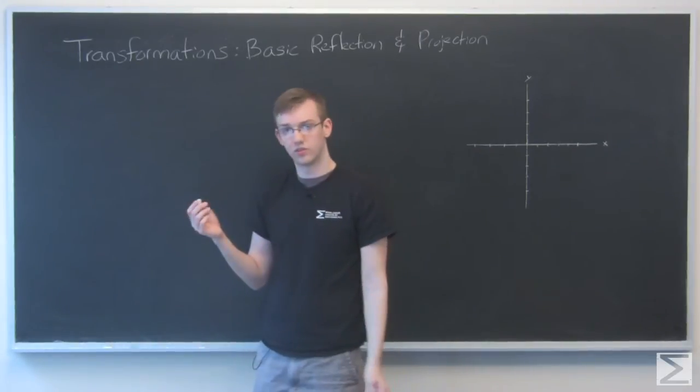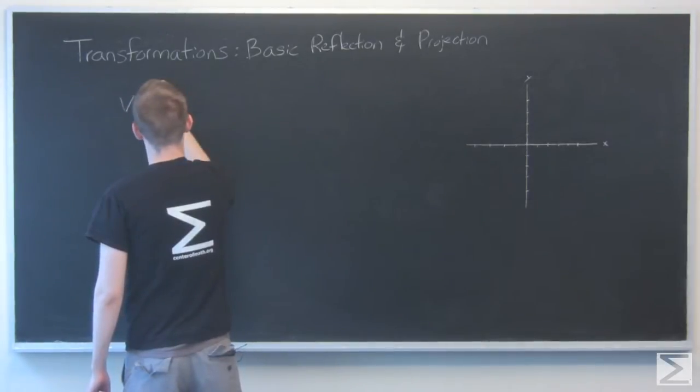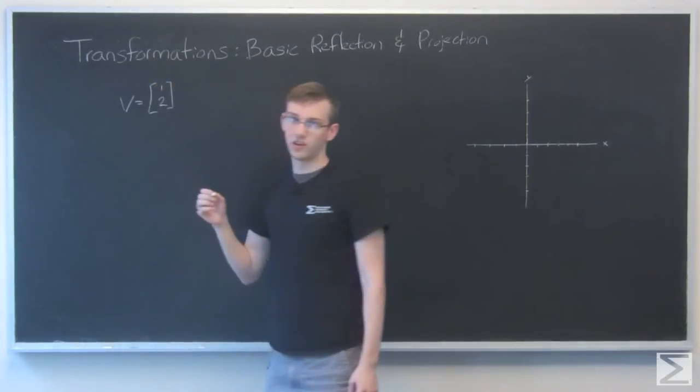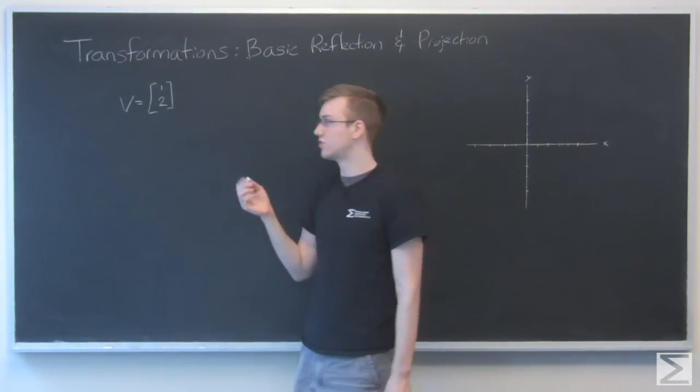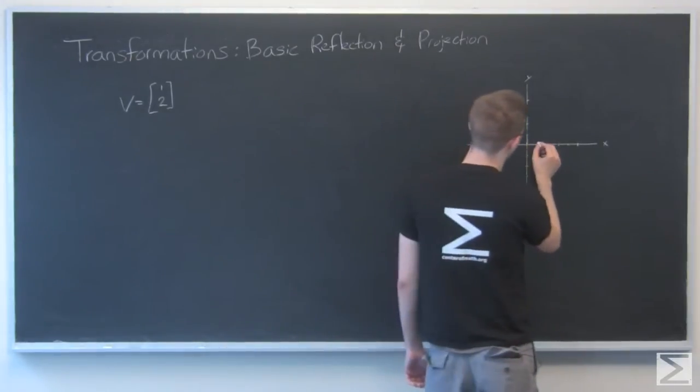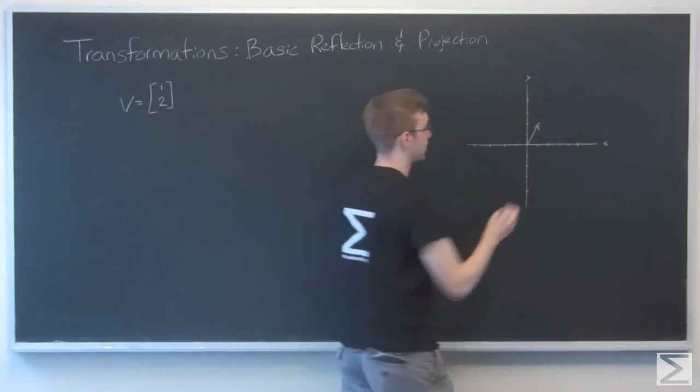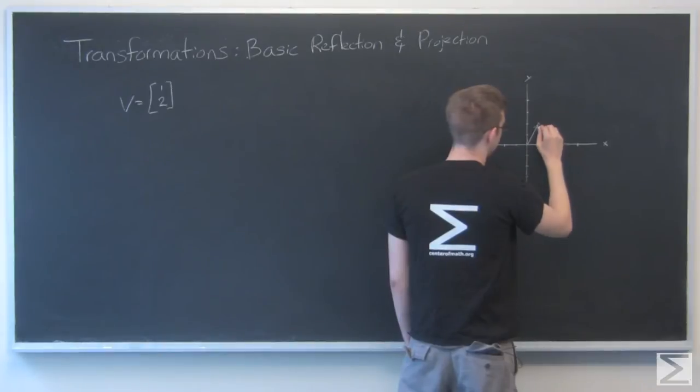Again we're going to look at the vector 1, 2 because that seems to be working well for us. And we're just going to see what a linear transformation can do to this vector. So I'll draw it here. We go out 1 and up 2. And that's V.